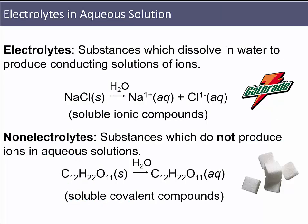Electrolytes are substances that dissolve in water to produce conducting solutions of ions. One component lost during sweating is sodium chloride — this relates to the Gatorade story about replacing what was lost during sweating for the University of Florida's football team. Sodium chloride solid placed in water gives us Na⁺ cations and Cl⁻ ions. You can add a solvent above and sometimes you'll see a delta arrow indicating you're going to heat something.